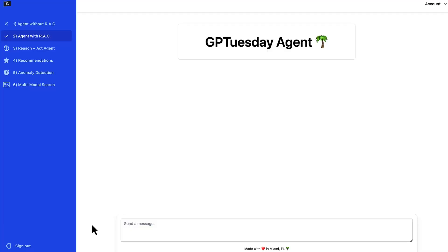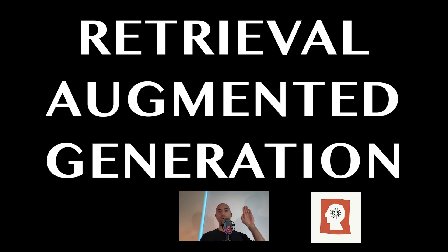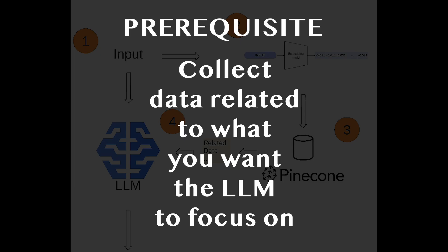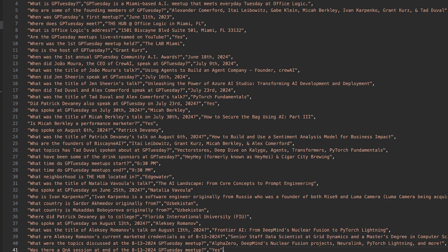In the next demo, we're going to combine this LLM agent with vectors. Here we have an LLM agent called the GPTuesday agent. Unlike the previous agent, this one uses RAG — Retrieval Augmented Generation — a technique that combines the use of an LLM with a vector database. The only prerequisite for using RAG is collecting accurate data regarding the domain we want the LLM agent to focus on. For our use case, I've generated 40 Q&As related to the GPTuesday meetup that we will convert into vectors and upload to Pinecone.